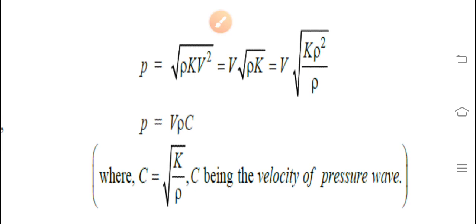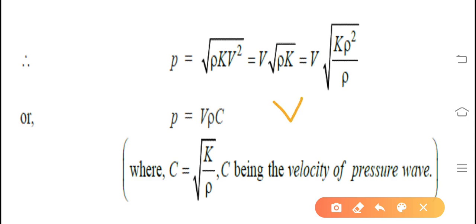And if you simplify you will get p equals v rho c. Why v rho c? This rho squared we can take it as rho outside, so we will get v rho multiplied by under the root k upon rho. Where k upon rho, we know that celerity of pressure wave is under the root of k by rho. That's why it is simplified to p equals v rho c.